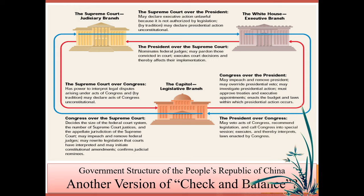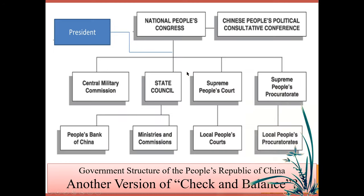Take a look at the government structure of Western countries. It is well known for the so-called check and balance structure. The Congress exercises the legislative power — to make legislation and create a legal system. The Supreme Court is confirmed with the power of judiciary. And the government, the White House in the US, is the executive branch confirmed with the power to exercise administrative power. However, in China, we don't have that concept of check and balance, at least not the version you can see from the United States.